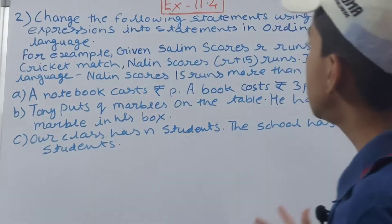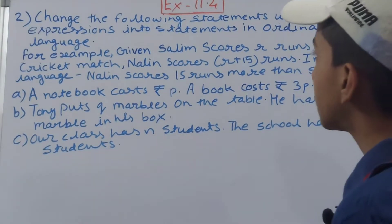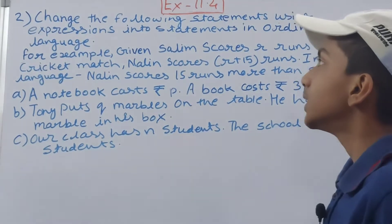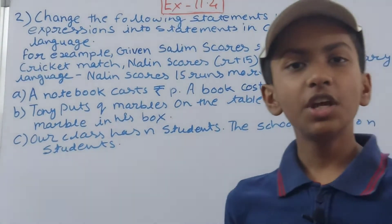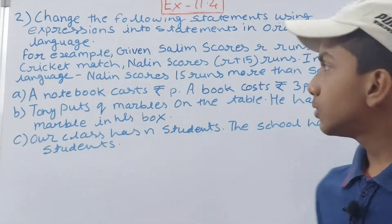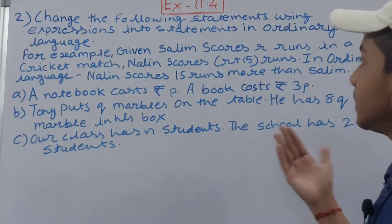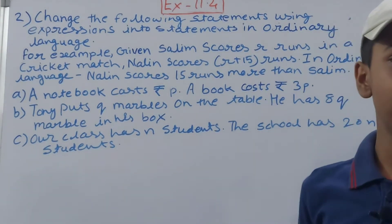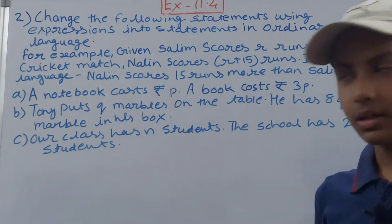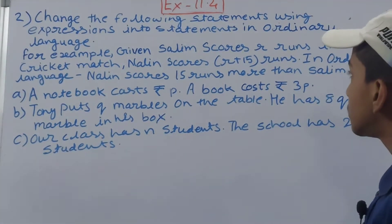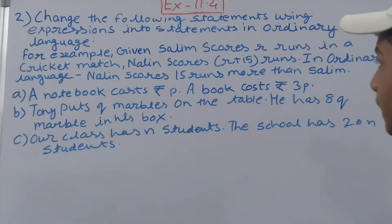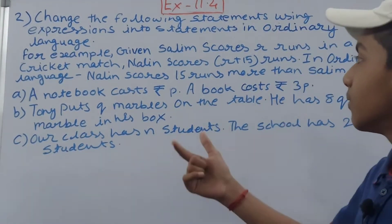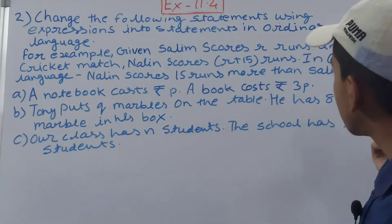This question says: change the following statements using expressions into statements in ordinary language. We have to change algebraic expressions into ordinary language. For example, given that Salim scores r runs in a cricket match, and Naline scores r plus 15 runs.